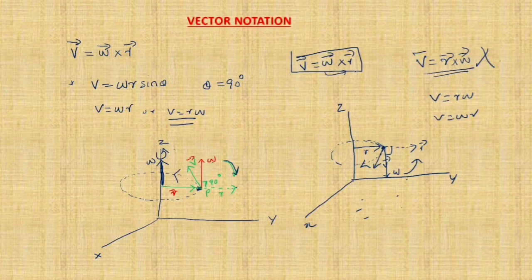So what is the basic formula? V equals omega cross r. If you write V equals r cross omega, that is the wrong equation. In terms of magnitude you can write V equals r omega or V equals omega r, no problem. But in vector notation the equation must be V vector equals omega cross r. This is the vector notation of linear velocity and angular velocity.